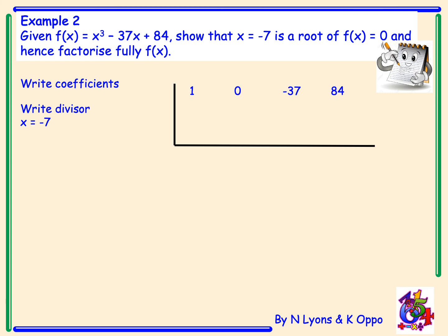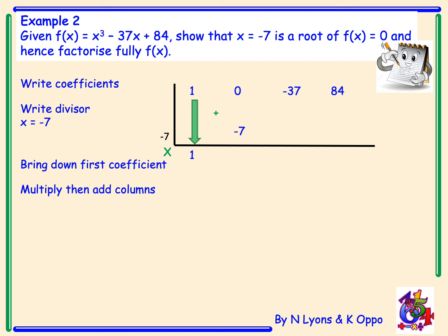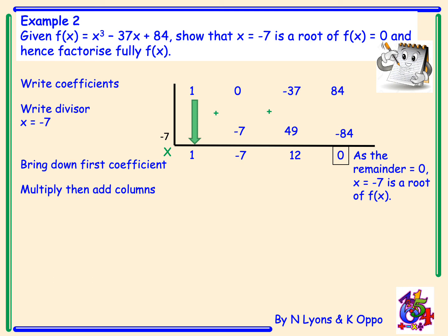Our divisor is -7, which we write outside the table. Bringing 1 down: -7 × 1 = -7; 0 + (-7) = -7; (-7) × (-7) = 49; -37 + 49 = 12; (-7) × 12 = -84; and 84 + (-84) = 0. We again have a remainder of 0, so x = -7 is a root of f(x).